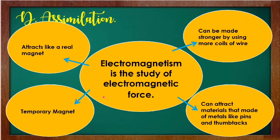For our assimilation part: What is electromagnetism? Electromagnetism is the study of electromagnetic force. It can be made stronger by using more coils of wire. It can attract materials made of metals like pins and thumbtacks. It attracts like a real magnet and is a temporary magnet.